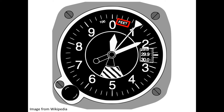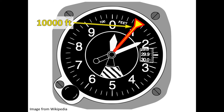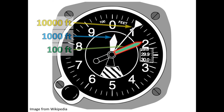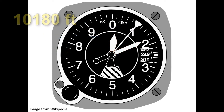The student must be able to read the instrument with ease. The instrument features three needles. This needle indicates the altitude in ten-thousands of feet. The short hand indicates altitude in thousands of feet, and the long hand in hundreds of feet. Here, the indicator shows an altitude of some ten thousand one hundred and eighty feet.